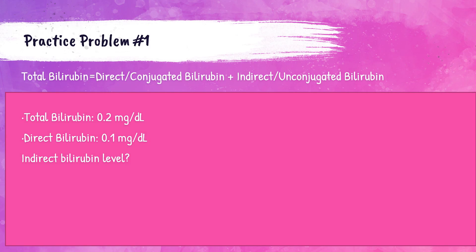Practice problem number one. The calculation is: total bilirubin equals direct bilirubin plus indirect bilirubin. This patient's total bilirubin is 0.2 milligrams per deciliter — the normal reference range is 0.2 to 1.0, so this patient is normal. The direct bilirubin is 0.1 milligrams per deciliter — the normal reference range is 0 to 0.3, so this is also normal. The problem is asking us to find the indirect bilirubin.